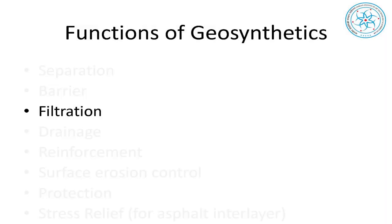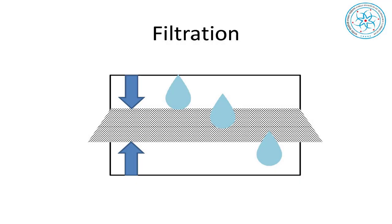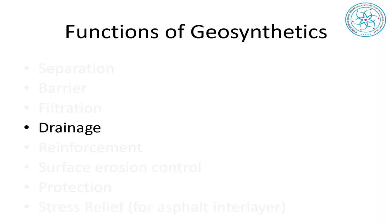Then we have filtration. Filtration means some flow is likely to occur — particularly downward or vertically — and water is able to pass through, but soil is being prevented from moving. That is filtration — always flow across the material. In both vertical and horizontal cases, water flows by gradient while soil particles are not allowed to move. In a dam, if soil particles move, there will be piping and erosion damage.